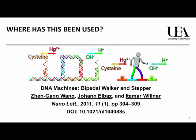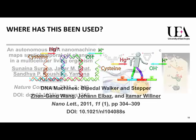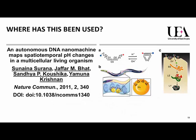Where has this been used and how have different people utilised this type of science? An example from 2011 from the Wilna group showed that you can get a piece of DNA to walk using these different types of conditions. Another example from the Krishnan group showed that you could actually monitor pH changes in a live organism using these types of switches. There are many other examples, but these were two clear ones to show you.